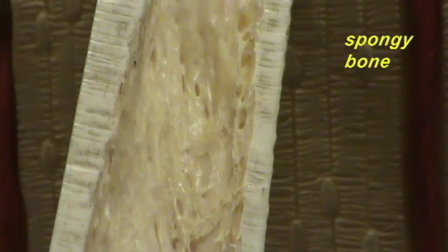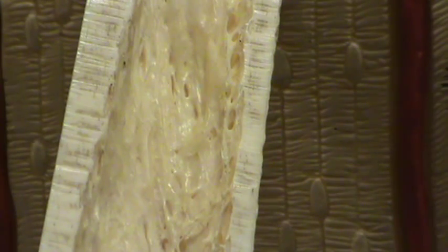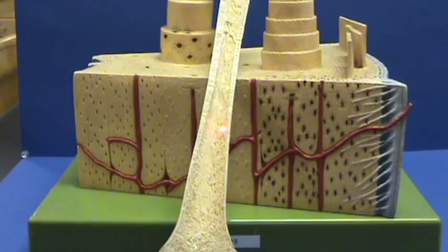Now the reason we're looking closely at this cut bone surface is that the model represents a piece of bone that would correspond to a section of what we're looking at right over here. So if you were to just take a little piece of this bone and blow it up, you would have this bone model.